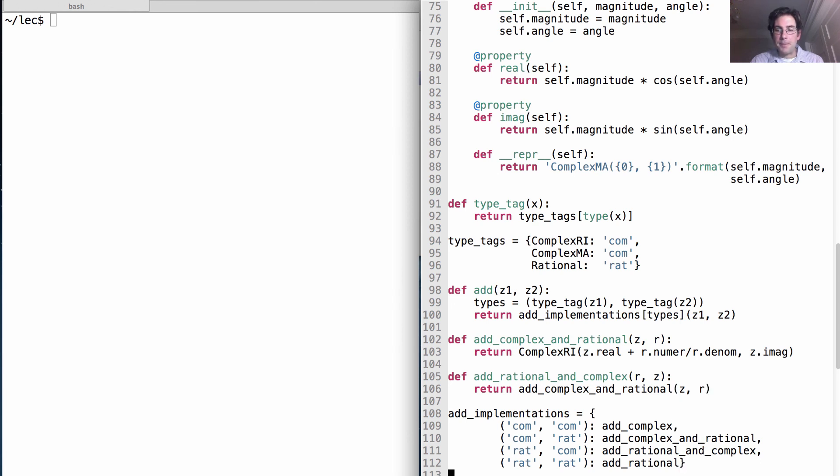Okay, so we've written a fair amount of code. Let's make sure it works. And we'll do that by creating half and creating z as a complex number.